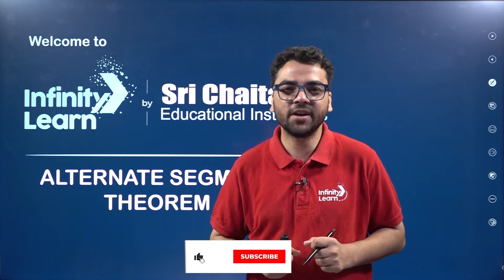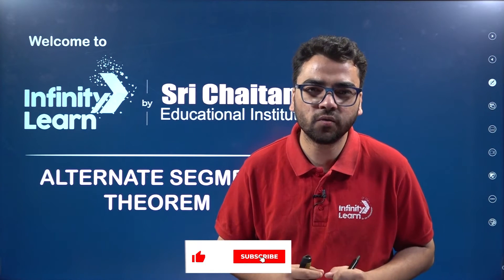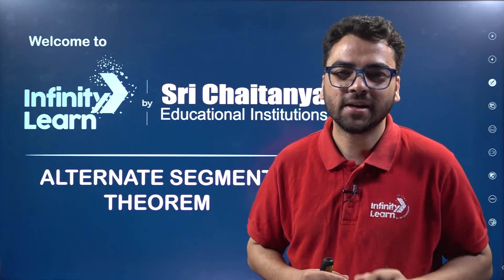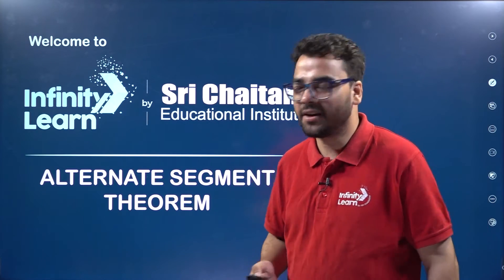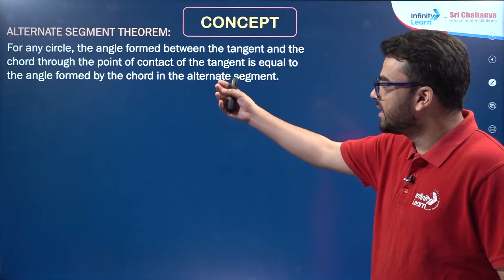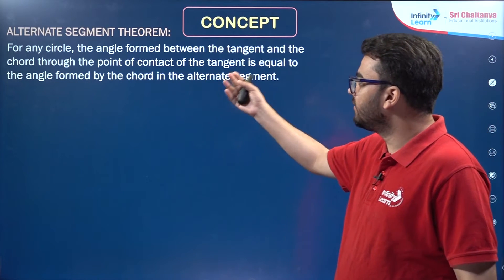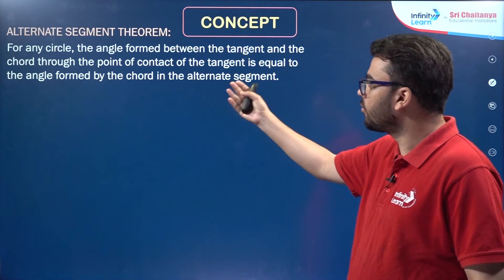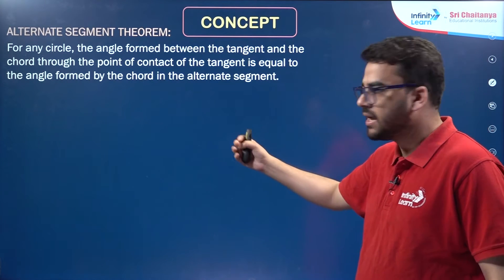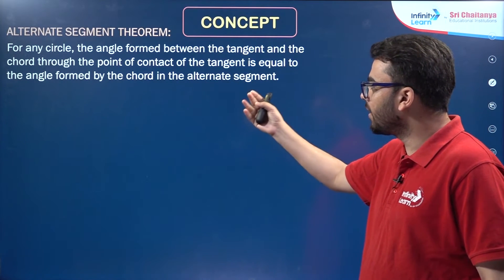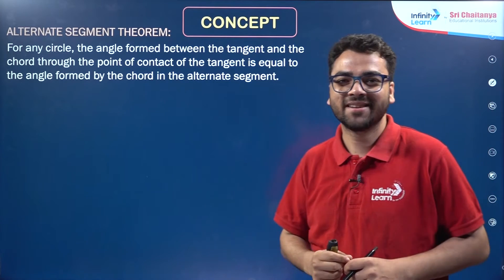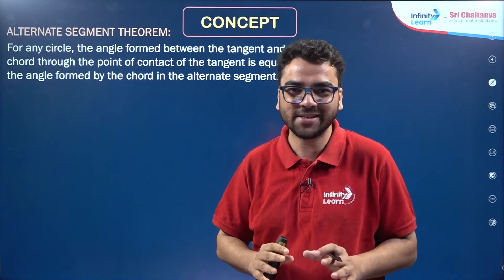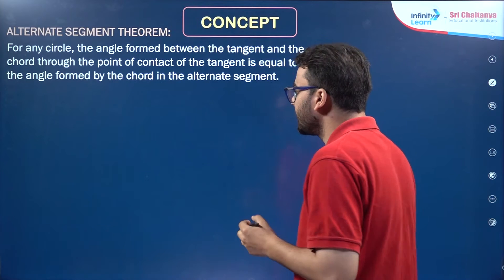Hello everybody. In this video we are going to cover a very important theorem called the alternate segment theorem. The statement is: for any circle, the angle formed between the tangent and the chord through the point of contact of the tangent is equal to the angle formed by the chord in the alternate segment. The statement is a bit complex, but let me explain.